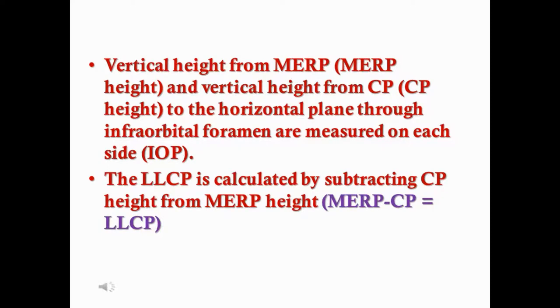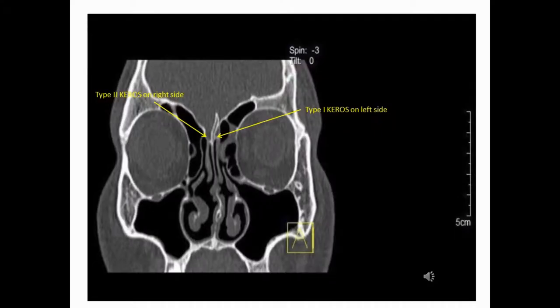The length of the lateral lamella of the cribriform plate is calculated by subtracting the CP height from the MERP height: MERP minus CP equals LLCP. The CT scan coronal section shows Type 1 Keros on one side (1 to 3 mm), and Type 2 Keros on the other side (4 to 7 mm), as shown by the yellow arrows.